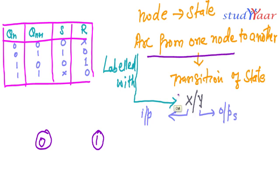And then it has arcs from one node to another indicating transition of state. So I'm going to have an arc from 0 to 1. When does my output go from 0 to 1?